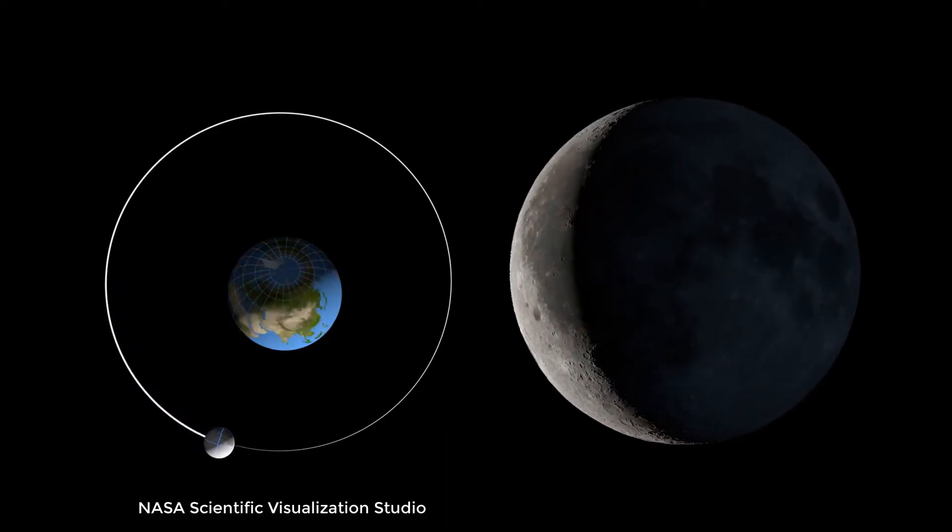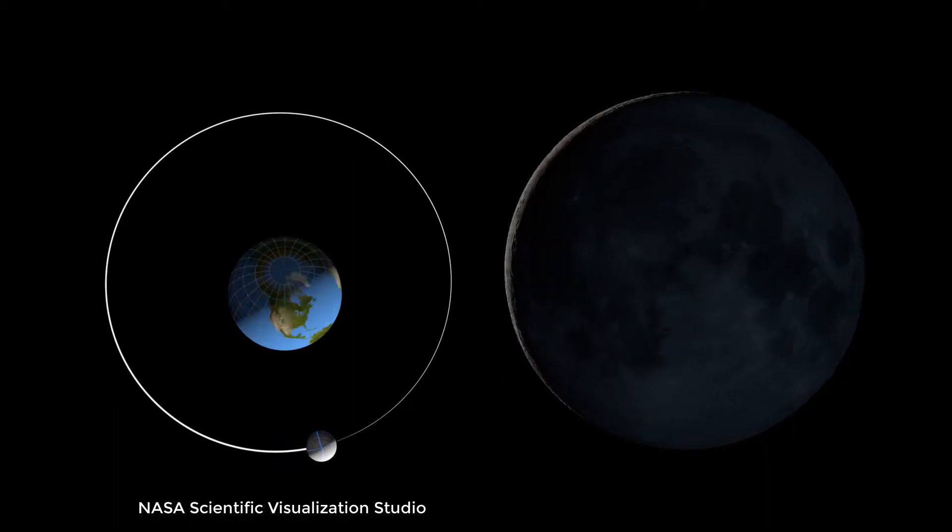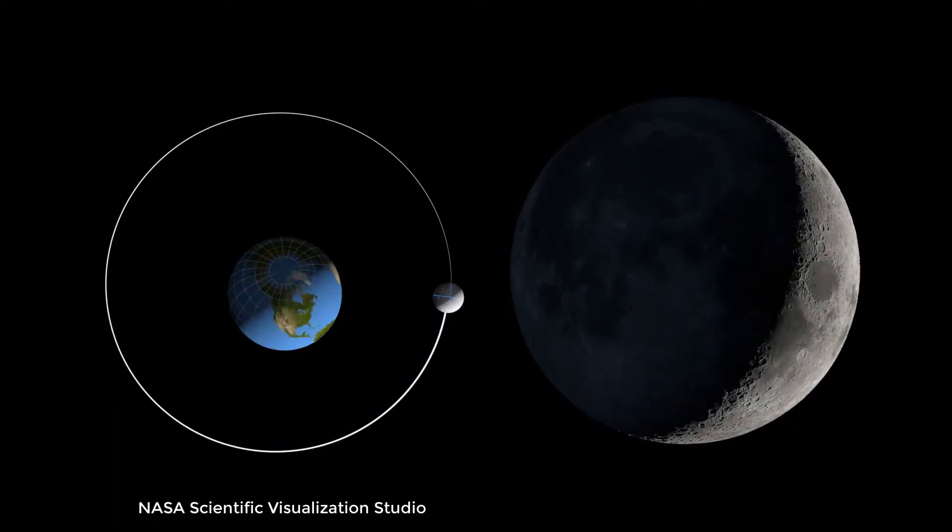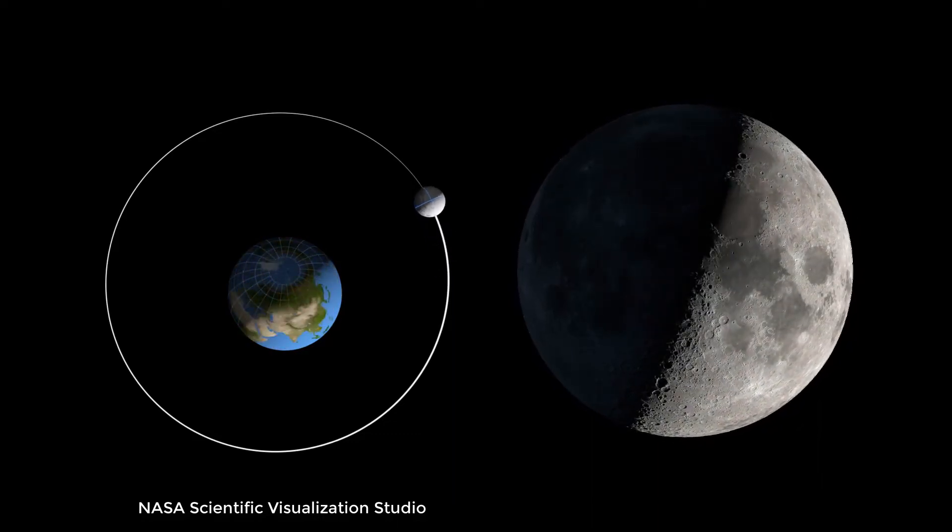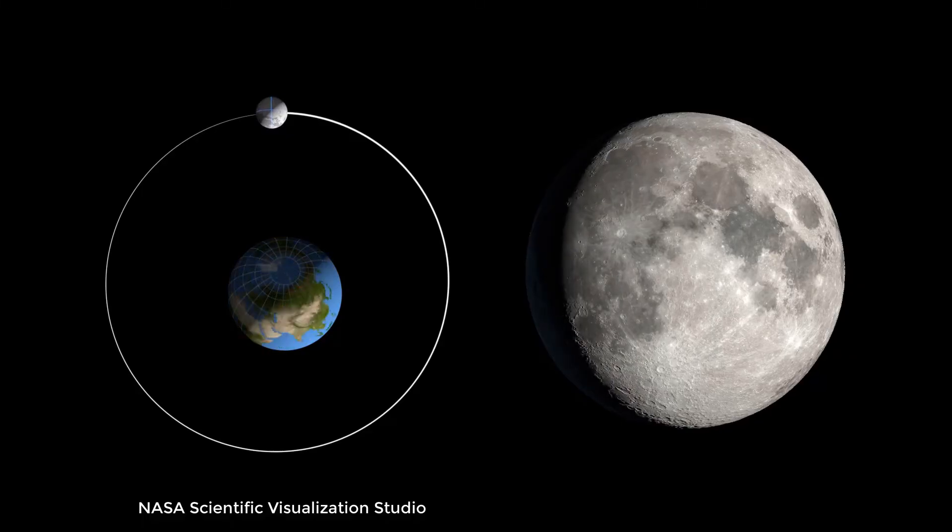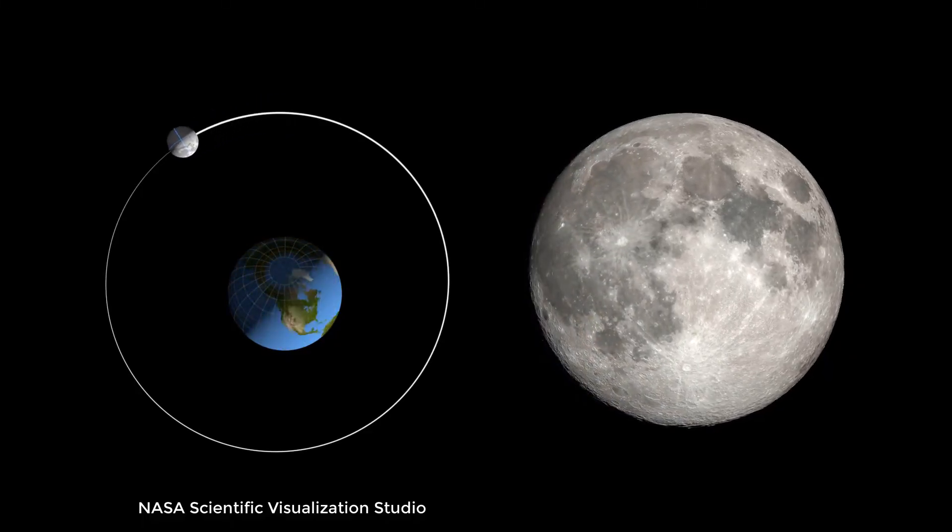And again, roughly two weeks later, the story's going to be reversed, and the moon's spin is going to outpace its movement in the orbit. And this is what explains the side-to-side wobble in libration. We'll be able to see a little bit around the east or a little bit around the west.